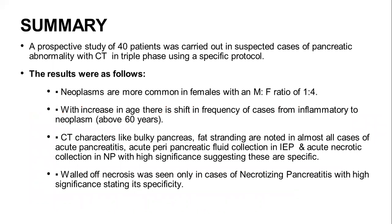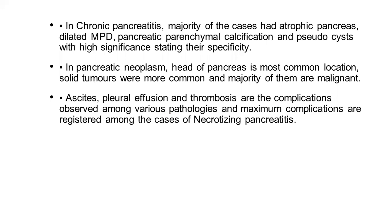Summary. A prospective study of 40 patients was carried out in suspected cases of pancreatic abnormality with CT triple-phase using a specific protocol. Neoplasms are more common in females with a male to female ratio of 1:4. With increase in age, there is a shifting frequency of cases from inflammatory to neoplasm. Wall of necrosis was seen only in cases of necrotizing pancreatitis, stating its high specificity. In chronic pancreatitis, majority of cases had atrophic pancreas with dilated main pancreatic duct, pancreatic parenchymal calcification, and pseudocyst. In pancreatic neoplasm, the head of the pancreas is the most common location. Ascites, pleural effusion, and thrombosis are complications observed among various pathologies.